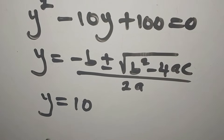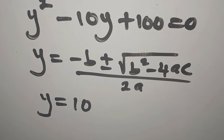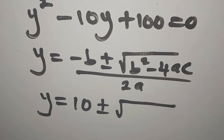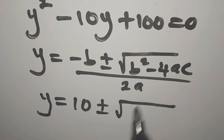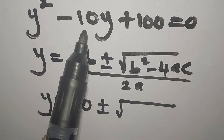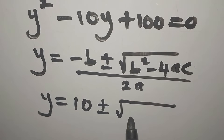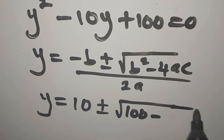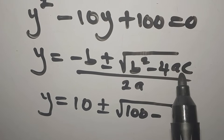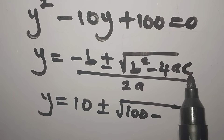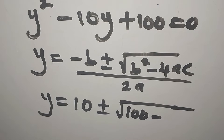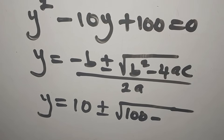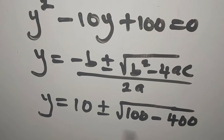Substituting into the formula: in place of negative b we write 10, because negative times negative gives positive. Then we have plus or minus the square root of b squared — that is negative 10 squared, which gives 100 — minus 4 times a times c, where a is 1 and c is 100, so 4 times 100 gives 400.